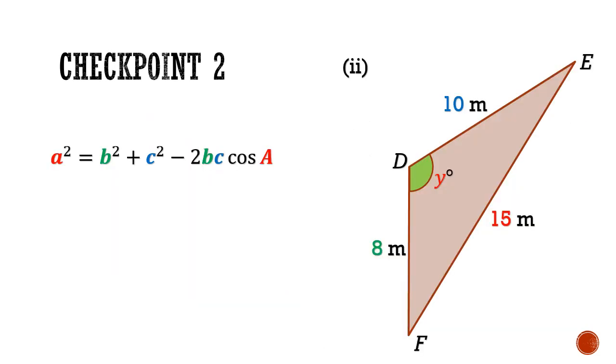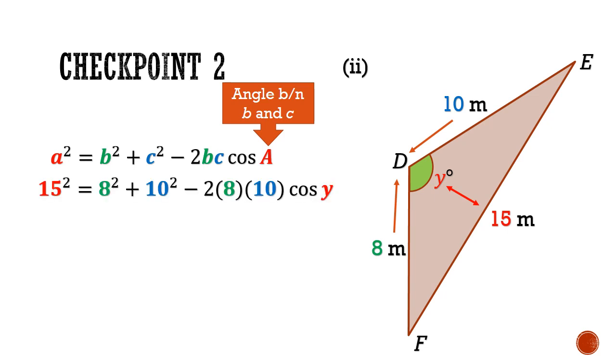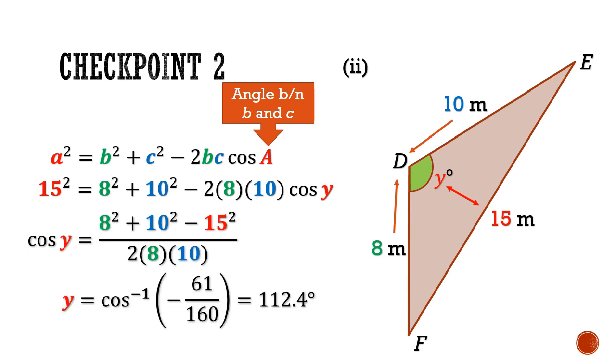And now on to part 2. Notice that the unknown angle y is opposite the side 15 m. And this unknown angle is between the two given sides 8 and 10 m. So when we make the substitution, the opposite side 15² = 8² + 10² - 2(8)(10) cos y. So making cos y the subject, we can take the inverse cosine function to get the angle y to be 112.4 degrees.